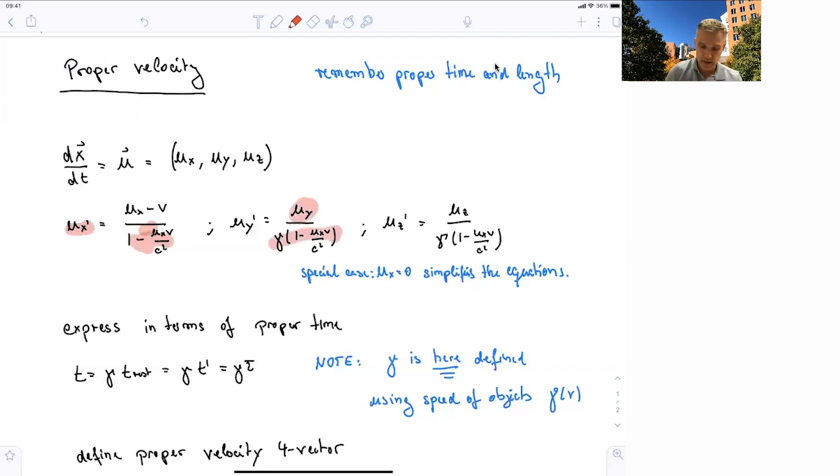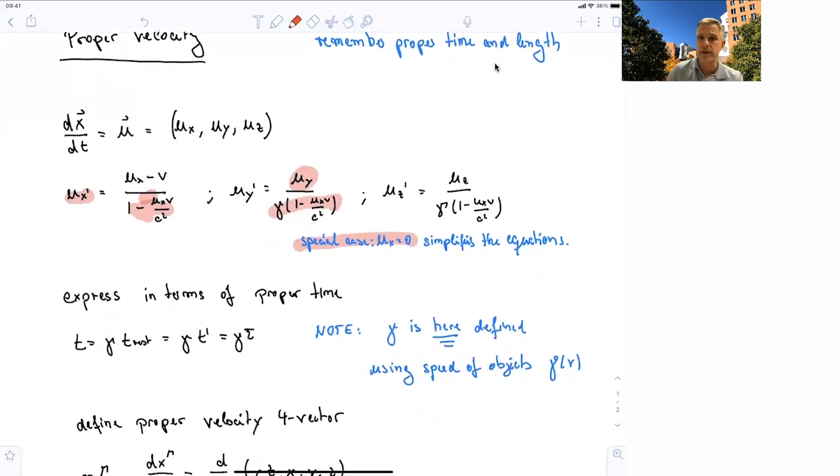Note here that there is a special case in which the velocity in x direction is equal to 0. Think about this object being in its own rest frame again, where the velocity in the boost direction is 0. You see that those equations simplify for ux prime, that would be simply equal to minus v, where uy prime would be uy and uz prime would be uz. So let's try to get at it.